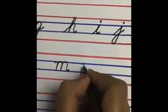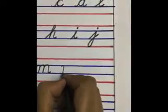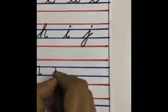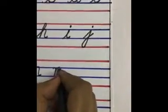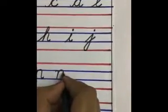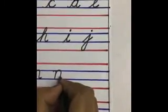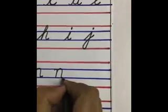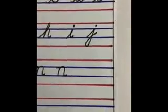Now from the second line, again touch the second line and complete it in the third line. This is cursive small letter N.